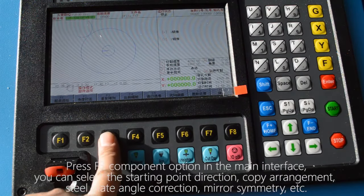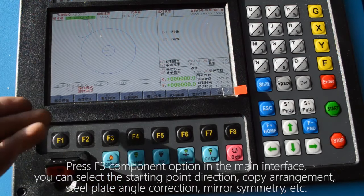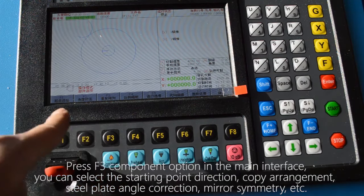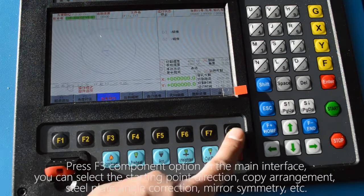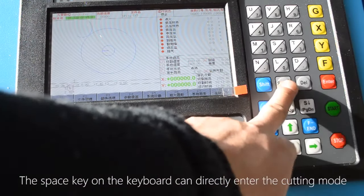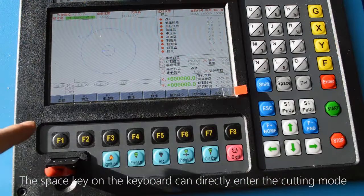Press F3 component option in the main interface, you can select the starting point direction, copy arrangement, steel plate angle correction, mirror symmetry, etc. The space key on the keyboard can directly enter the cutting mode.